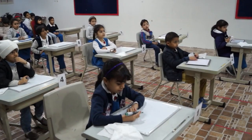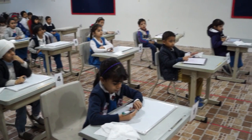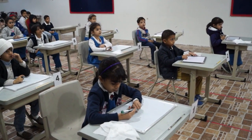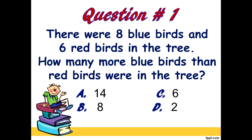In the tree, how many more bluebirds than redbirds were in the tree? A, 14. B, 8. C, 6. D, 2.